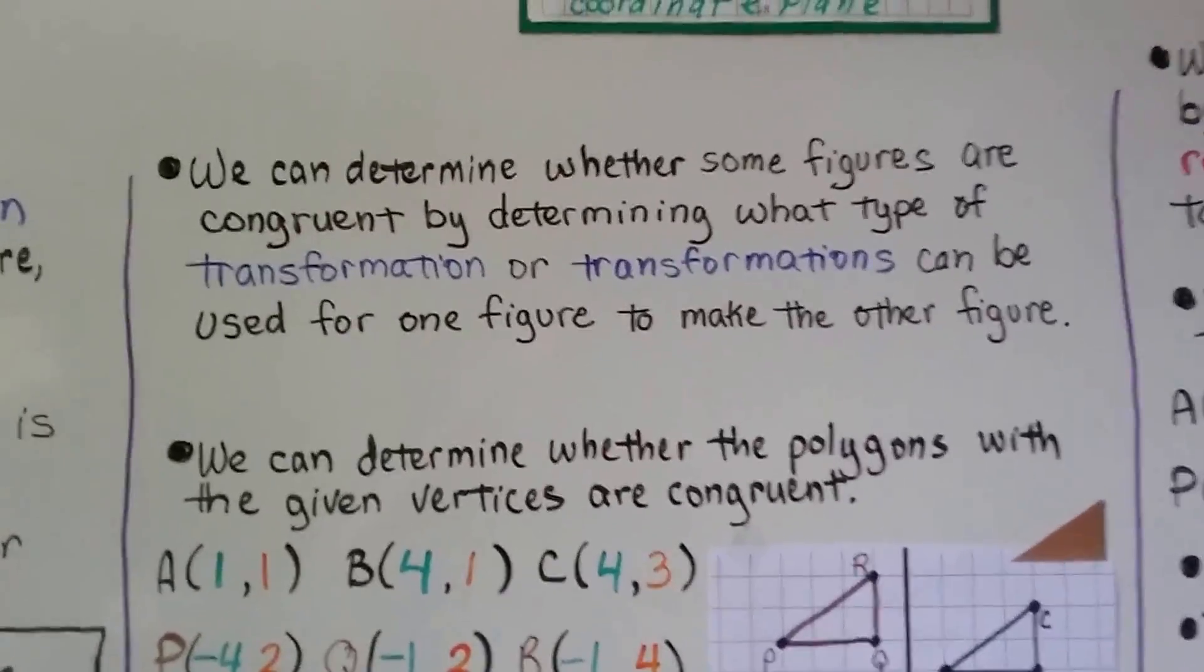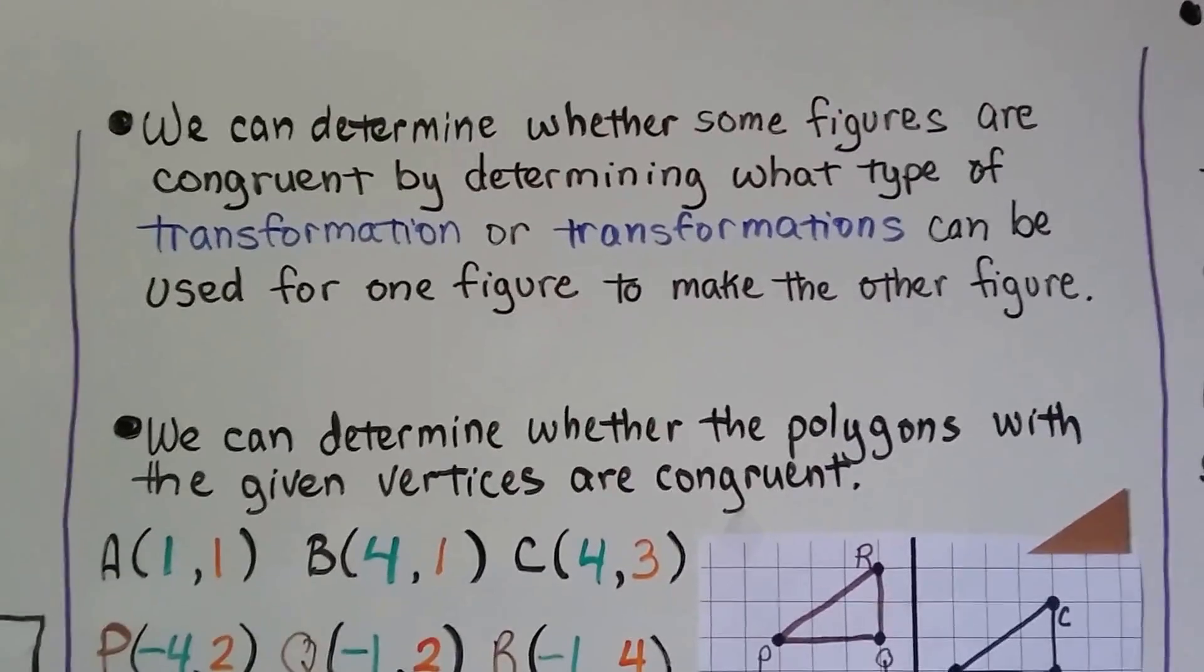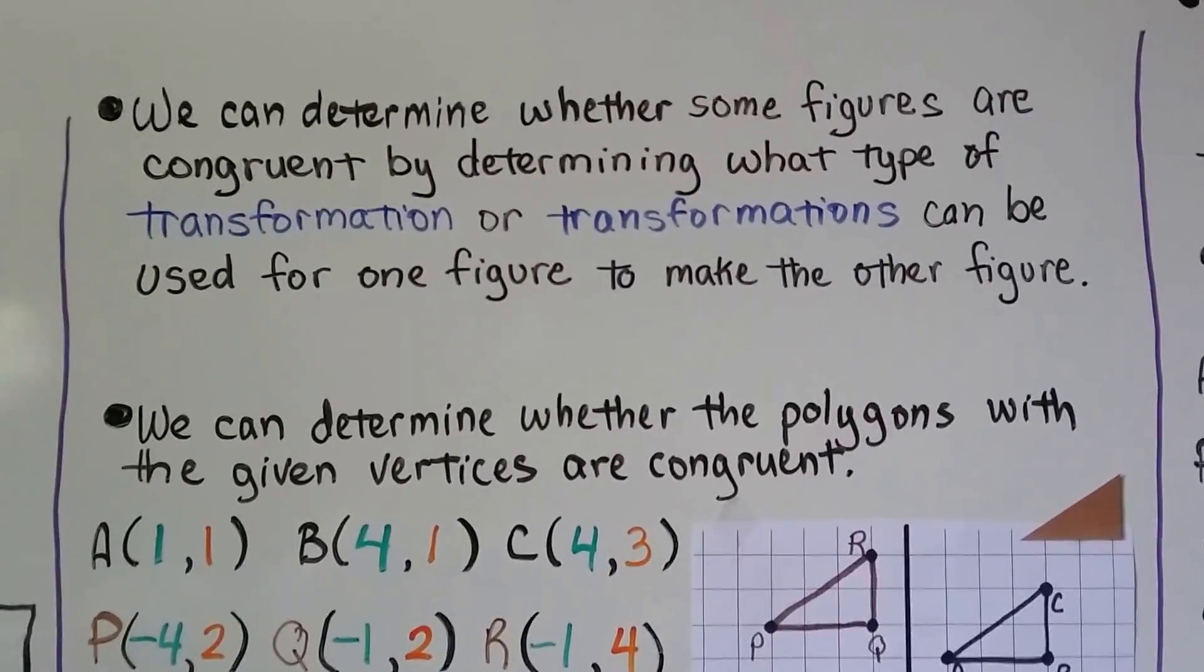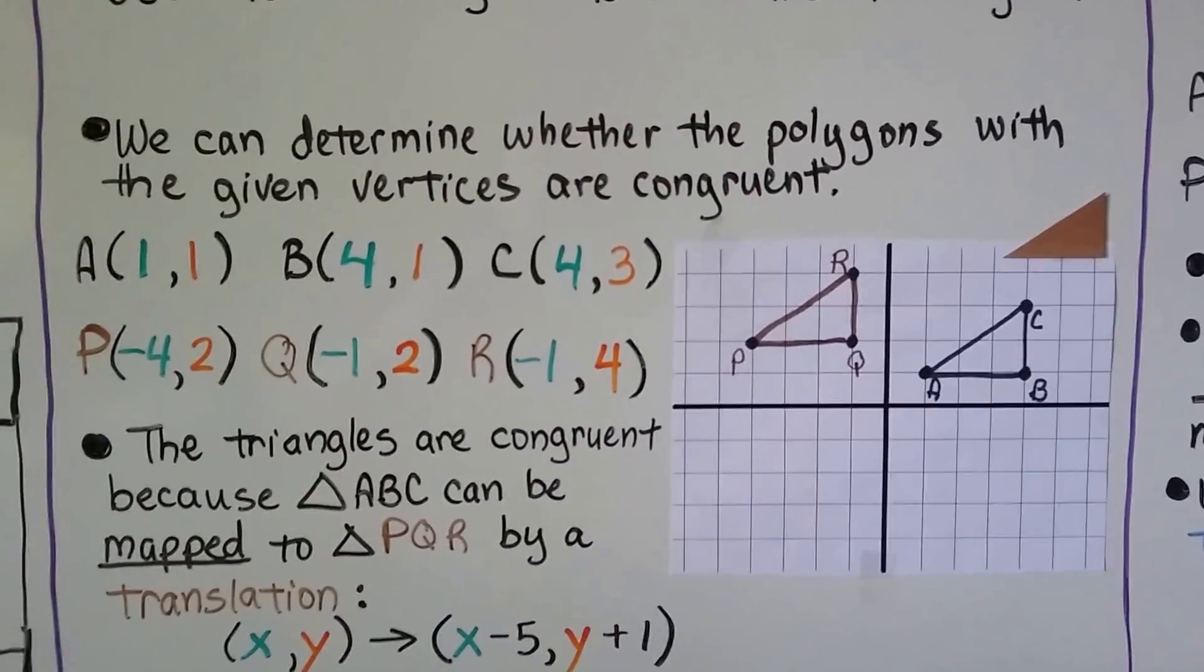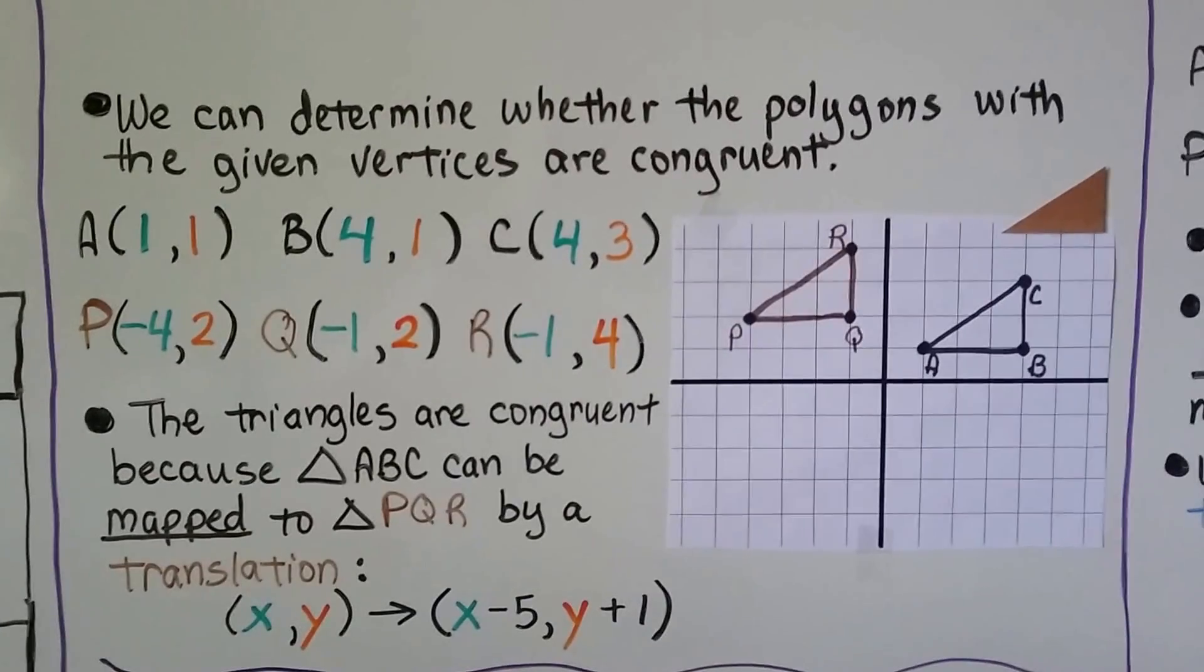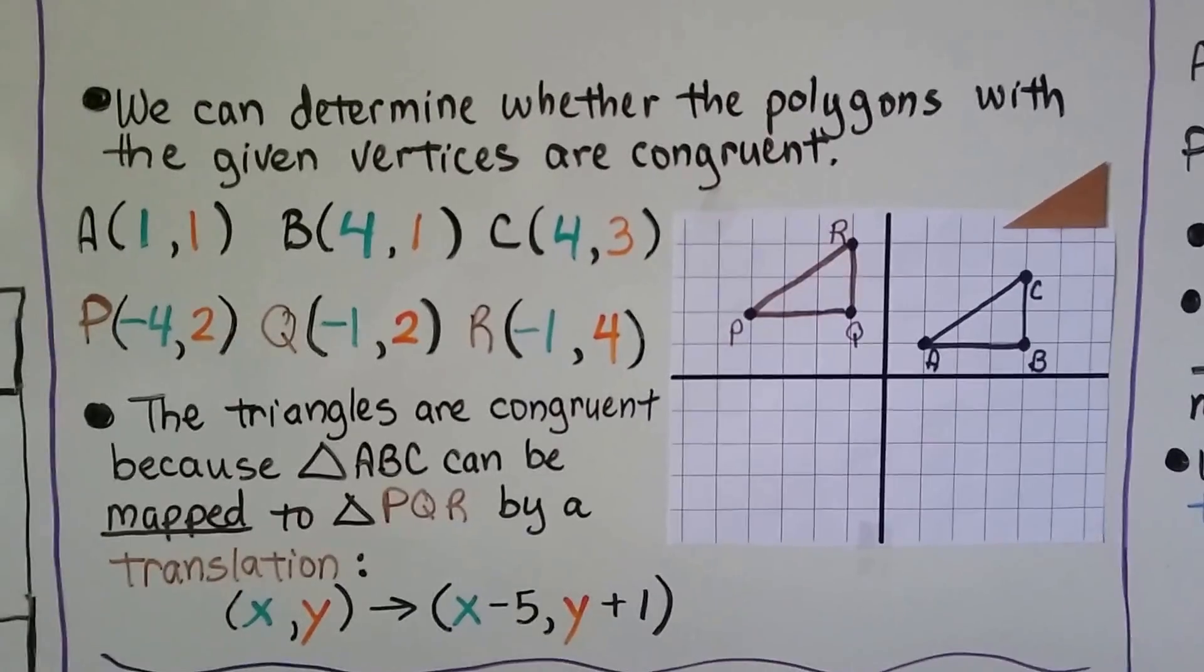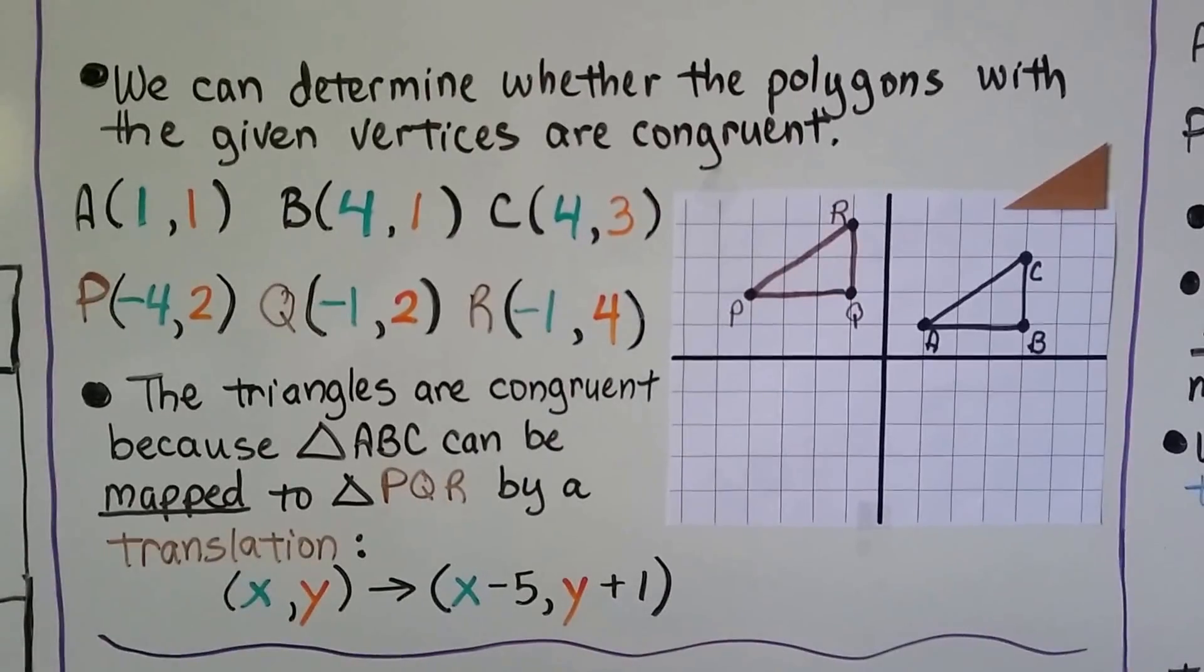And we can determine whether some figures are congruent by determining what type of transformation, or transformations, can be used for one figure to make the other figure. And we can determine whether the polygons with the given vertices are congruent. So we have triangle ABC, and you can see its ordered pairs there. And we have triangle PQR, and its ordered pairs. And you can see it in the coordinate graph.